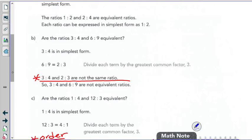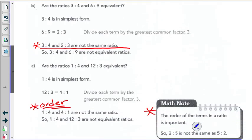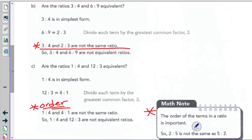I'm going to go pretty quickly. Letter B says that 3 to 4 and 6 to 9, are they equivalent? Well, 3 to 4 is in simplest form. 6 to 9 can go down to 2 to 3 if you take a 3 out of each of these, right? If you divide each of these by 3. 3 to 4 and 2 to 3 are not the same ratio. So yes, 3 fourths does not equal 6 ninths. They are not equivalent ratios.